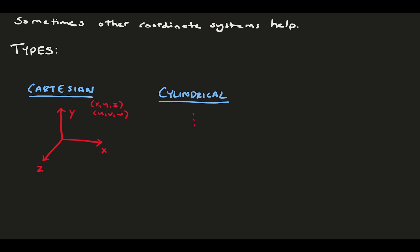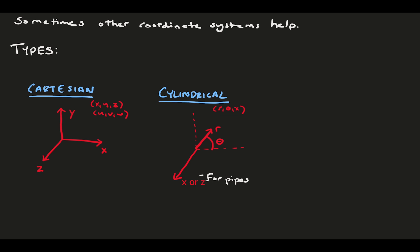In cylindrical, we use r, theta, and x, where r and x are distances from an origin, and theta is an angle with respect to a plane. These are most useful in pipe flows and have velocity components u sub r, u sub theta, and u sub gamma.